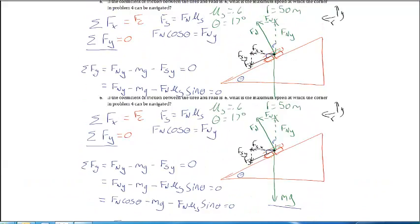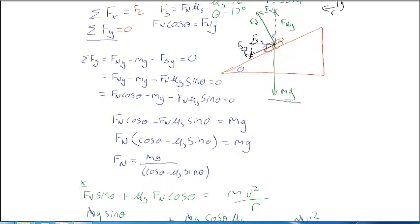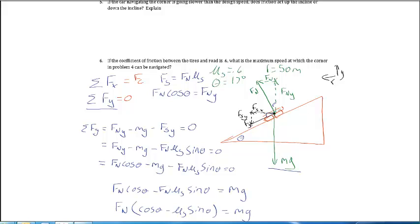Let's take a look at the last problem on this worksheet. This is a car turning a banked curve with a radius and with friction. It says if the coefficient of friction between the tires and the road is 0.6, what is the maximum speed at which the corner in problem 4 can be navigated?